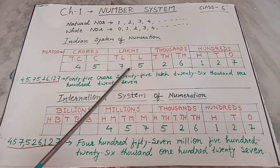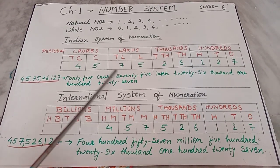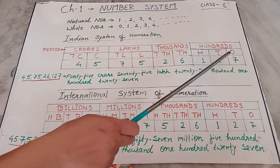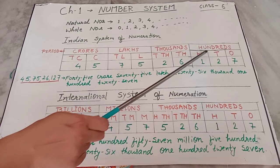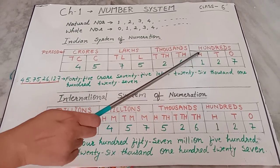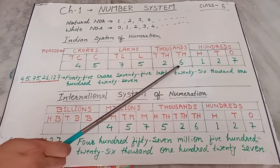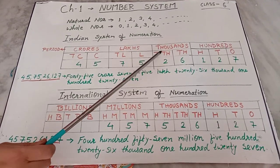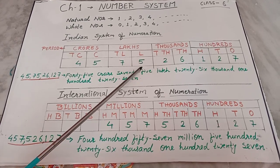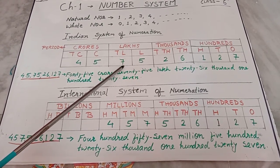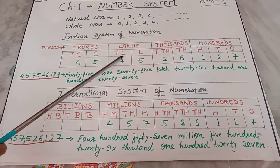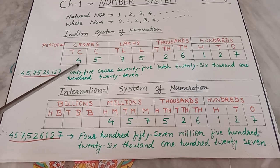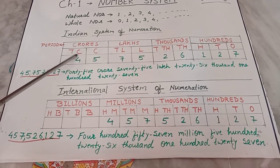This large number is placed in the chart as follows: 7 is at the 1s place, 2 is at the 10s place, 1 is at the 100s place, 6 is at the 1000s place, 2 is at the 10,000s place, 5 is at the lakhs place, 7 is at the 10 lakhs place, 5 is at the crores place, and 4 is at the 10 crores place.